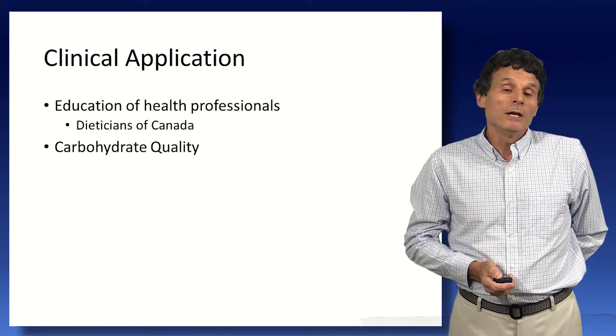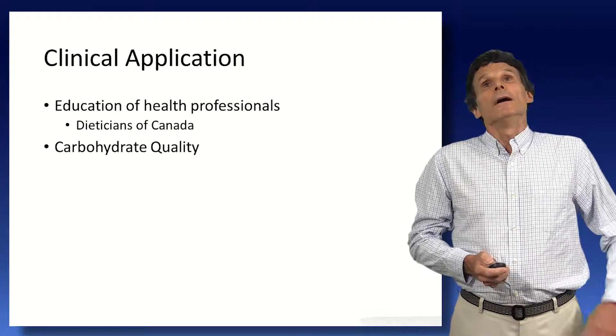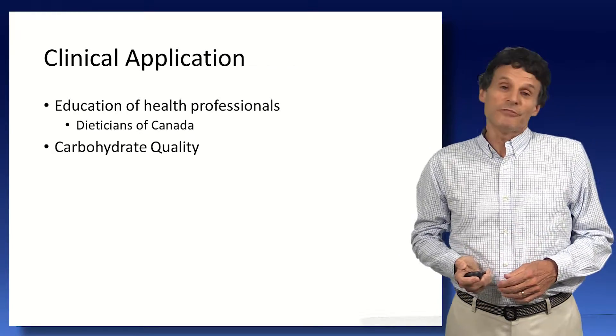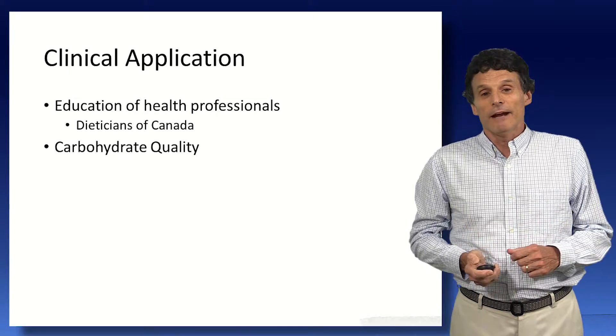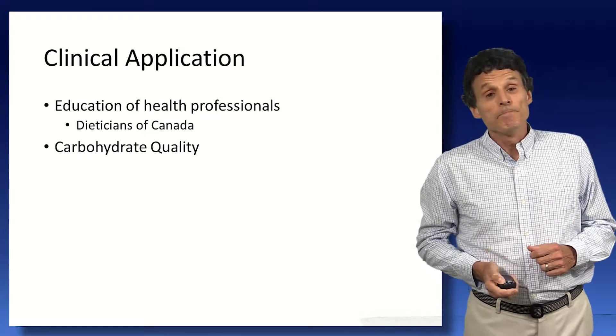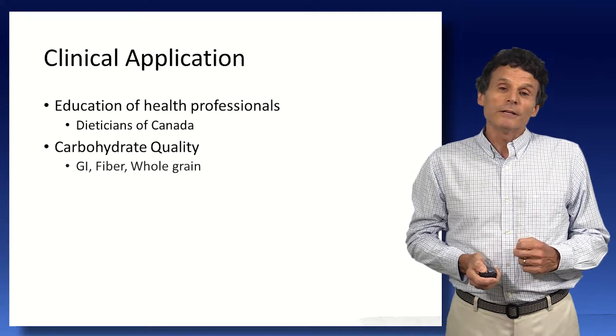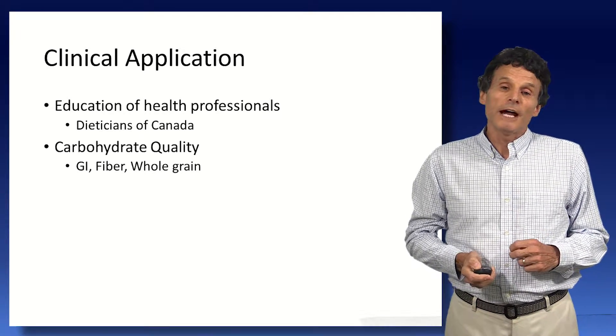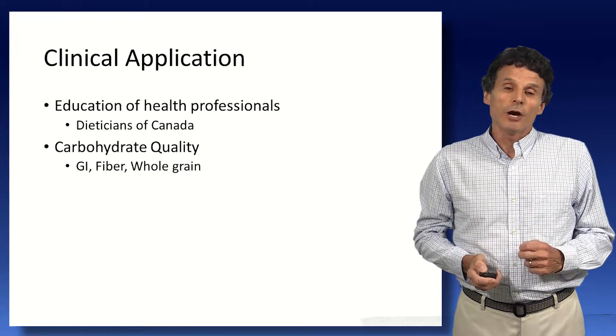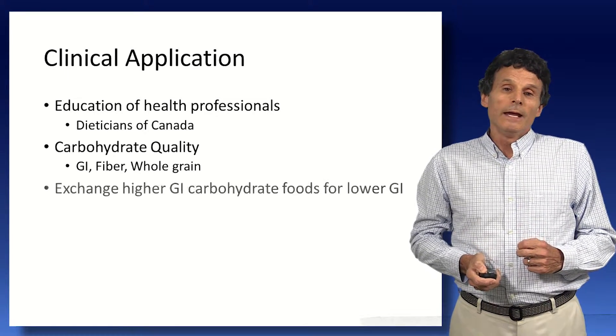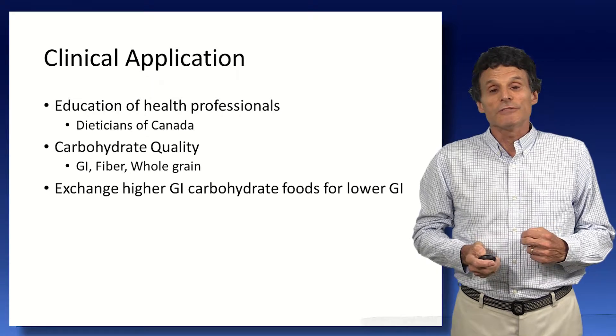We need to think of GI not as a measure of how healthy a food is for you. It's a measure of carbohydrate quality. We don't forget everything else we know about nutrition, but there are various markers of carbohydrate quality, including glycemic index, fiber, and whole grain, which can be used to assess the quality of our carbohydrate.